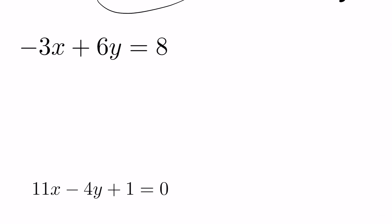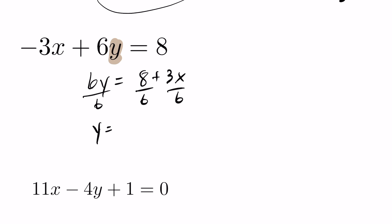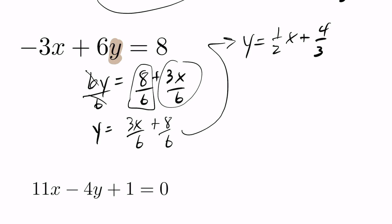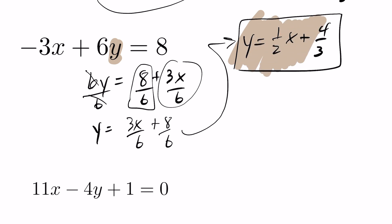For the next question, same idea — isolate y. This time add 3x to both sides, giving 6y equals 8 plus 3x. Divide across by 6 all the way across, giving y equals 3x over 6 plus 8 over 6. Reducing: 3 over 6 is 1 half, and 8 over 6 reduces to 4 thirds. So the equation in slope-intercept form is y equals 1 half x plus 4 thirds. The slope is 1 half and the y-intercept is 4 thirds.